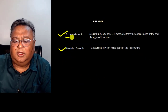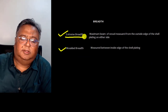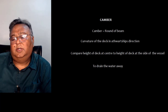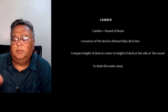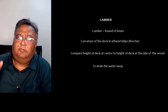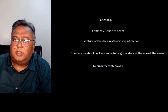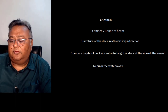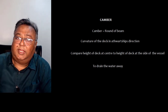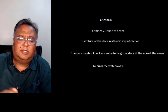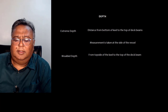Now let's move to camber. Camber is the round of the beam — actually this is the curvature of the deck in the athwartship direction, that is the port and starboard direction. Comparing the height of the deck at the center versus the height at the side of the vessel gives you the camber. The purpose of camber is to drain water away from the deck.